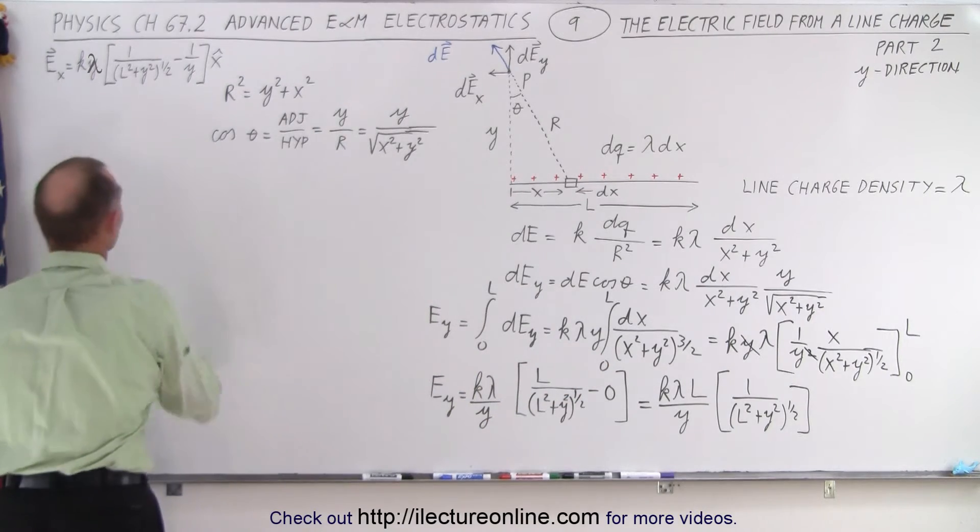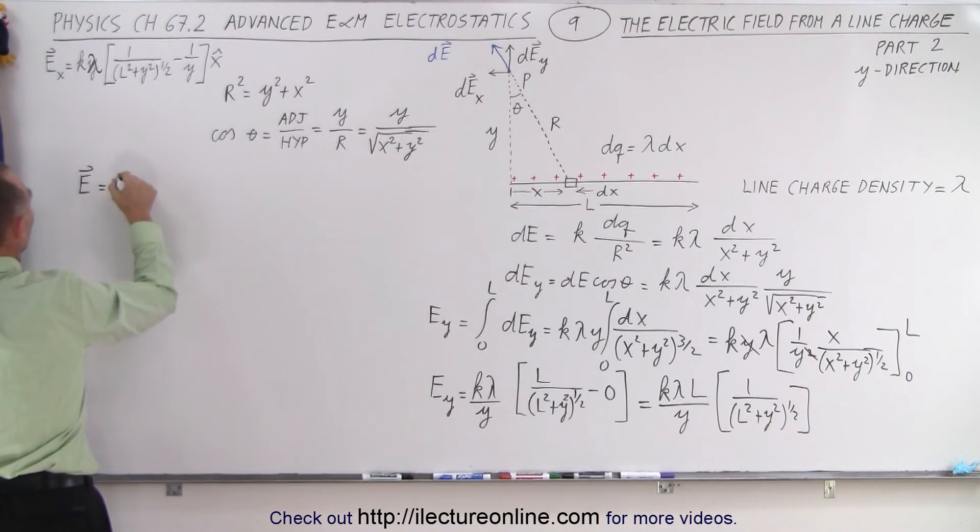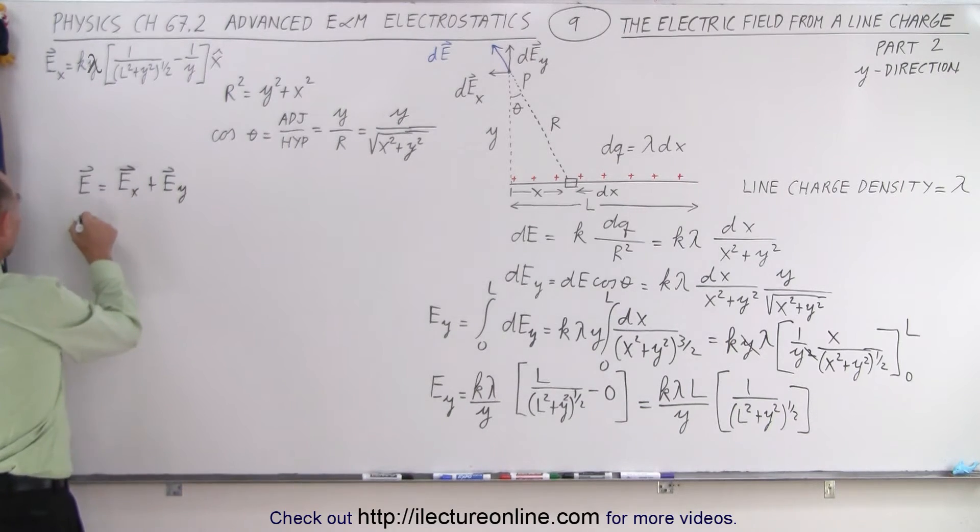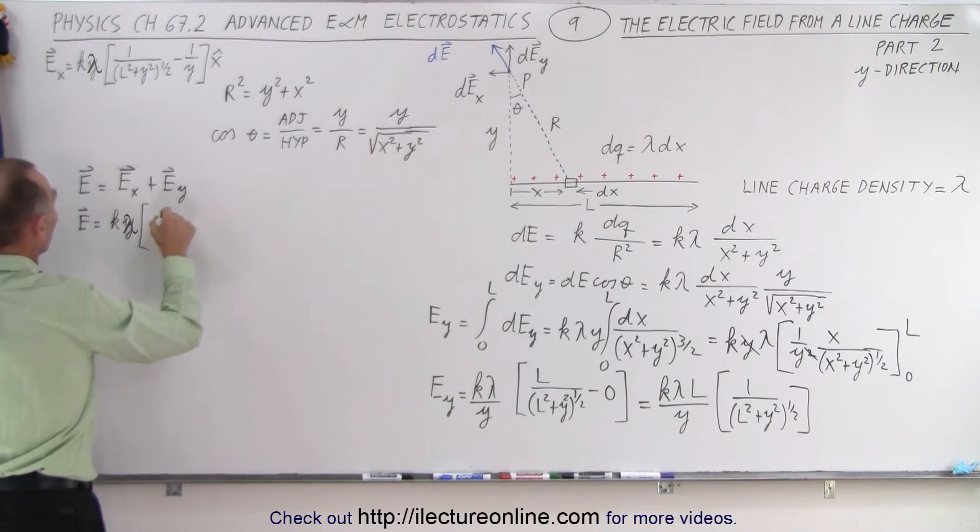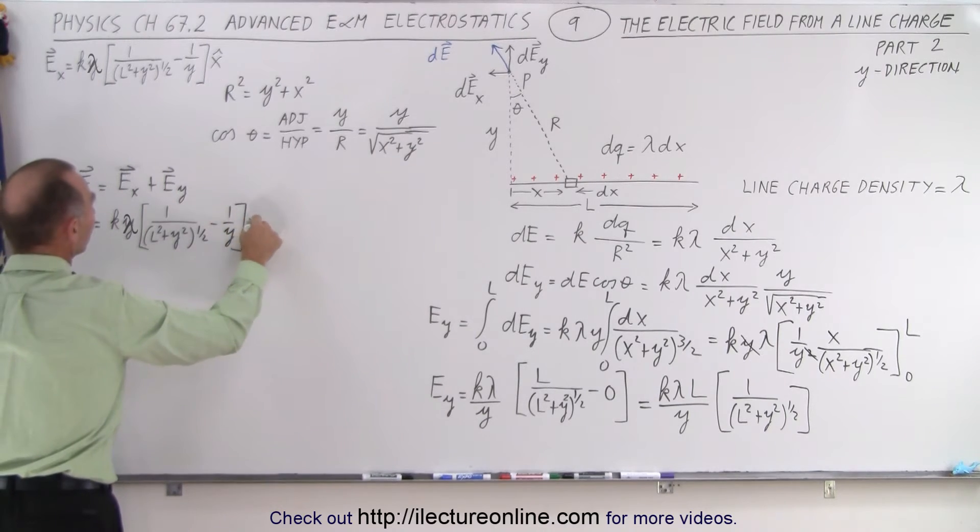Electric field is equal to simply the sum of the two, so it would be E sub x plus E sub y. That's not a very good arrow here. There we go. Getting lazy. And that means that the electric field can be written as k lambda times 1 over L squared plus y squared to the 1 half power, minus 1 over y in the x direction.